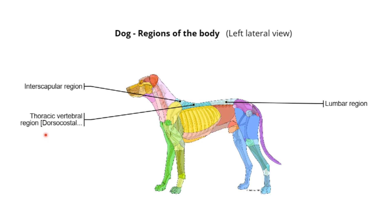This region is also called the dorsal costal region. As we talked about in the first lecture, dorsal means back — on top of something. Costal, or coste, is ribs in anatomy or in Latin. So we are above the ribs, which is why this region is also called dorsal costal. And again, the last one is the lumbar region, right here between the thoracic and the pelvic regions.